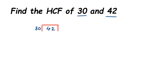We're dividing 42 by 30. Do a normal division: 30 × 1 = 30, subtract from 42, and we get a remainder of 12. Now from the second step it changes from normal division.